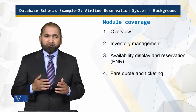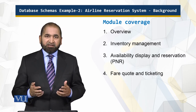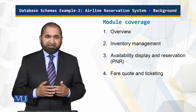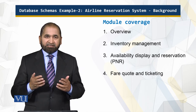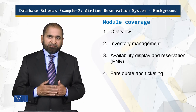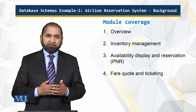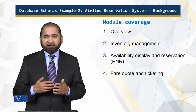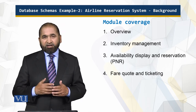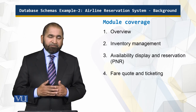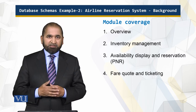I will give you an overview and cover inventory management. In airline language, inventory is a seat — the seat is central to the airline reservation system. Then we have the PNR, which is the Passenger Name Record, containing additional information about passengers. We will also cover fare codes and ticketing — how the fare is decided and what ticketing involves — as we go deeper into this module.